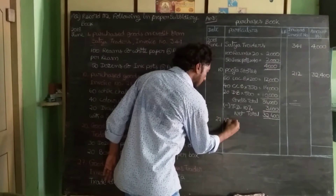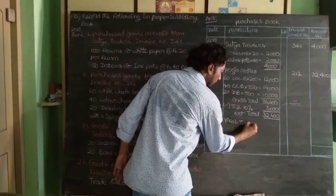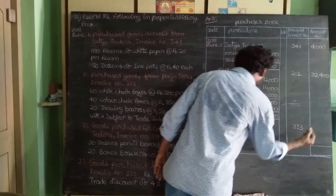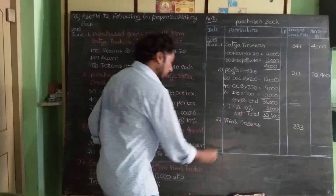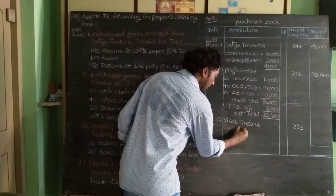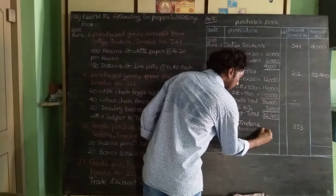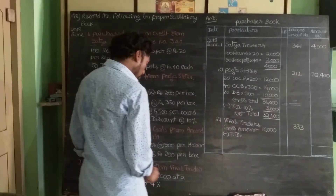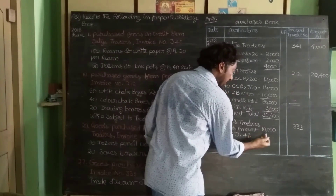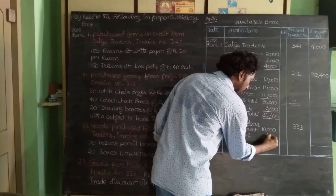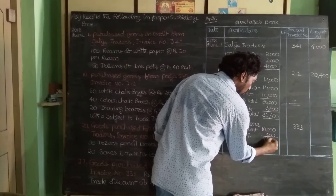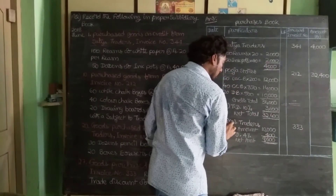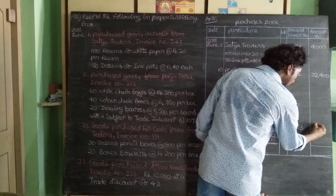June 27th: purchase from traders, invoice number 323. The gross amount is ₹10,000. Minus trade discount of 4%: 10,000 × 4% = ₹400. The net balance amount is ₹9,600. This net amount of ₹9,600 is recorded opposite the traders in the amount column.